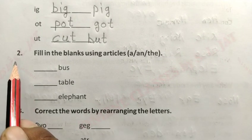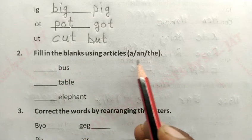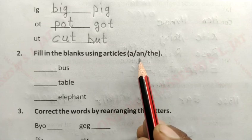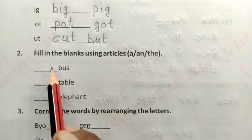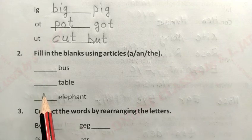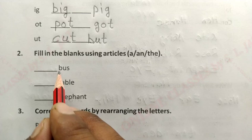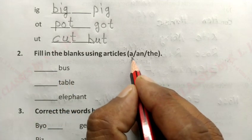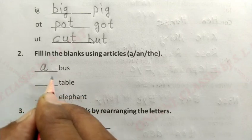Question Number 2: Fill in the blanks using articles A and AN. हमें A और AN का उपयोग करके blanks भरने हैं। पहला word है B-U-S = bus, तो यहाँ आएगा 'A bus'.